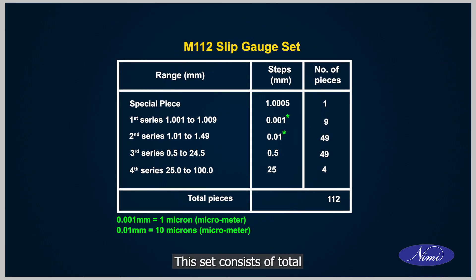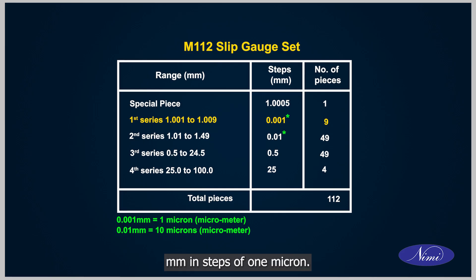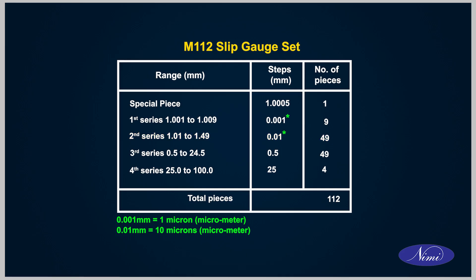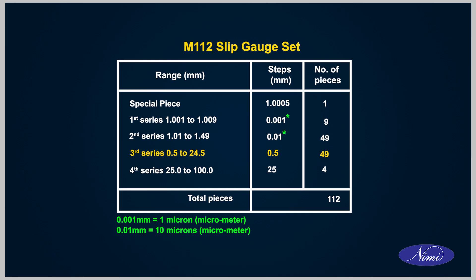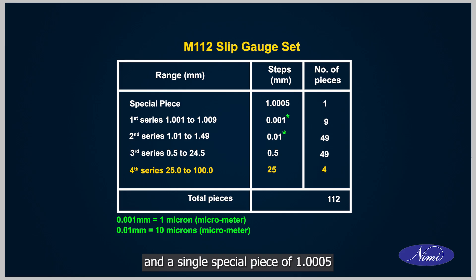M112: This set consists of a total of 112 pieces in 4 series with a special piece. The first series has 9 pieces from 1.001 to 1.009 mm in steps of 1 micron. The second series has 49 pieces from 1.01 to 1.49 mm in steps of 10 microns. The third series has 49 pieces from 0.5 to 24.5 mm in steps of 0.5 mm. The fourth series has 4 pieces from 25 to 100 mm in steps of 25 mm, and a single special piece of 1.0005 mm.